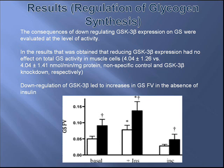Reducing GSK3 beta expression had no effect on total glycogen synthase activity in muscle cells. However, down-regulation of GSK3 beta led to an increase in glycogen synthesis in the absence of insulin, and reducing GSK3 beta expression also improved insulin action. The graph below shows the effects of GSK3 beta knockdown on glycogen synthesis activity.